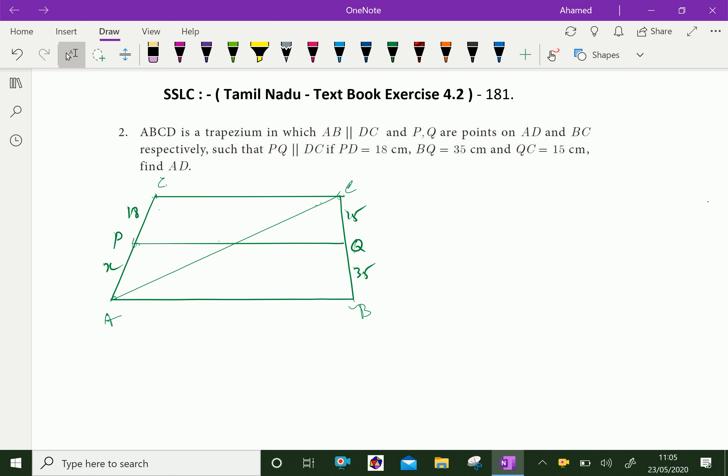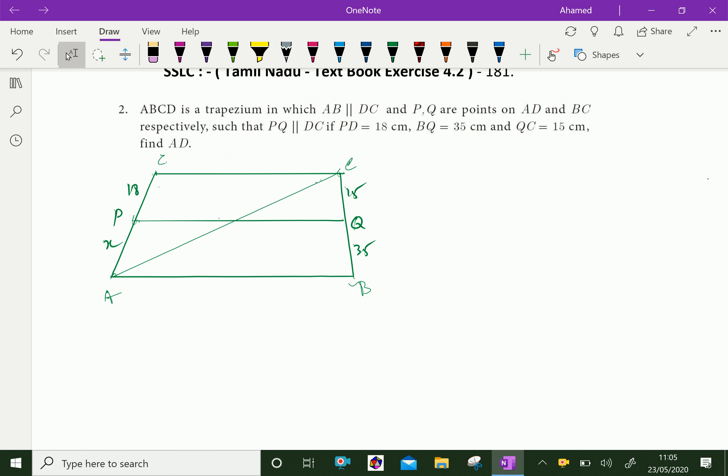Now, we have to find PA which is equal, let it be X cm. Here, any line parallel to the parallel side of the trapezium divides the non-parallel side proportionally.